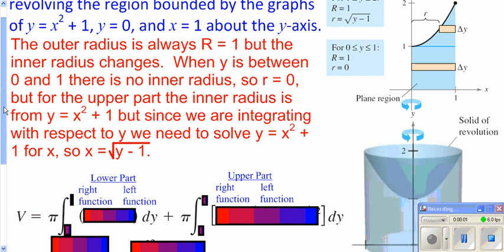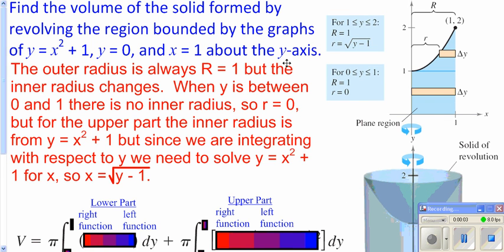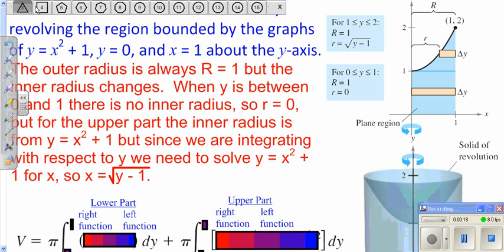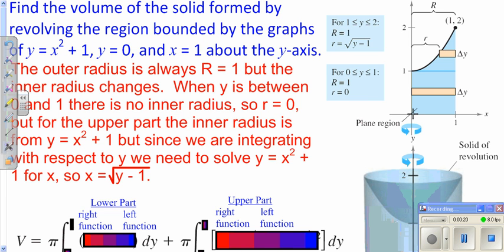We're going to continue to look at our volumes of revolutions. We're going to take this shape right here and revolve it around the y-axis instead of the x-axis. You'll notice with what we have over here, it's really one shape on the bottom, continuously, and that would be this shape. However, this shape up here changes as it goes up, so we're going to have to do this in two parts.